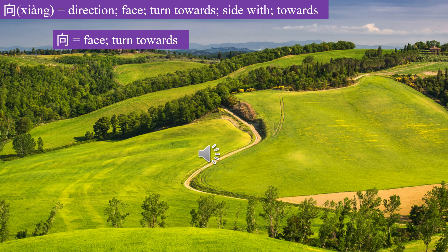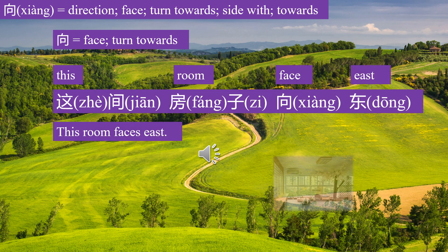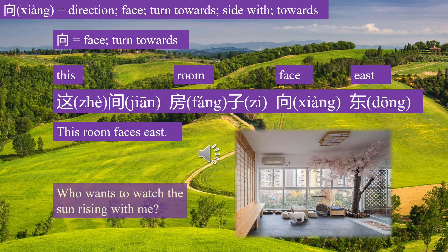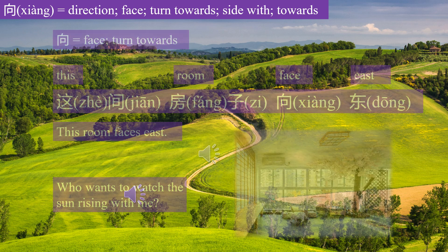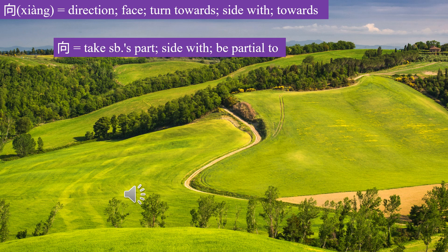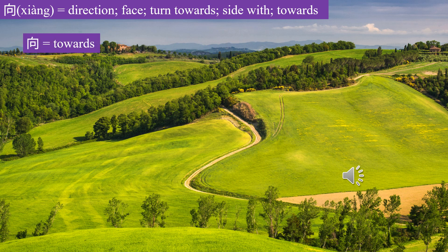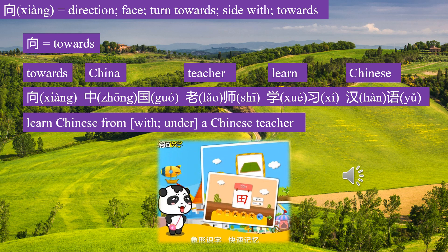向 means turn towards. 这间房子向东 — this room faces east. 向 means side with or take the side of: 你老是向着他 — you always take his side. 向 means towards: 向中国老师学习汉语 — learn Chinese from a Chinese teacher.